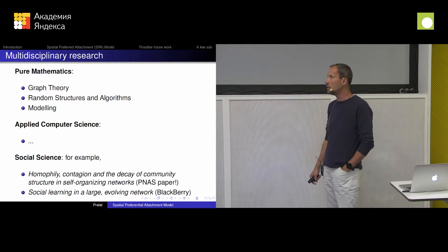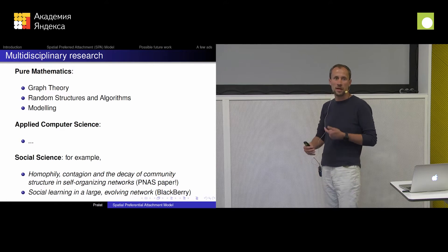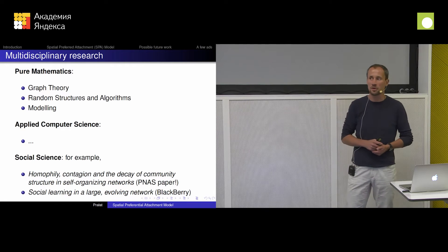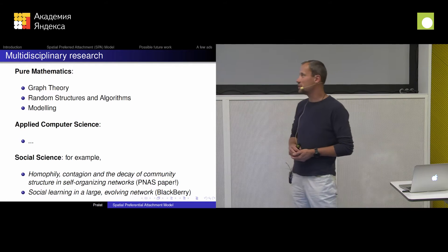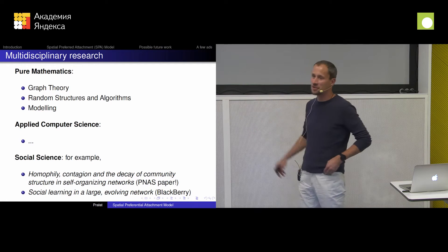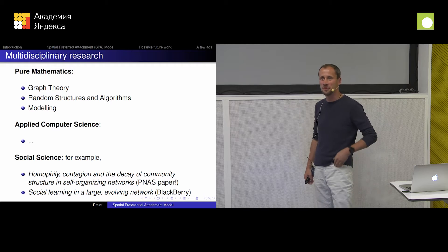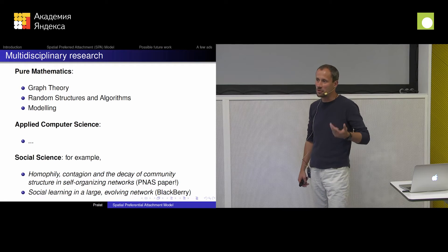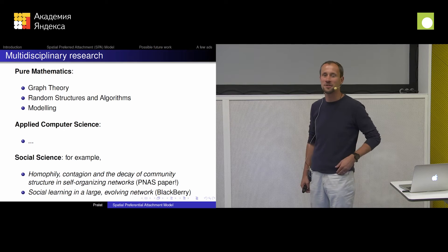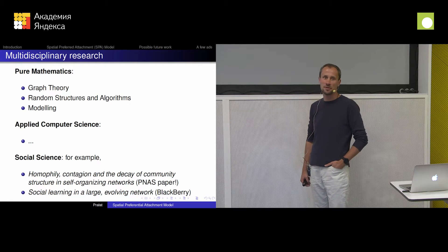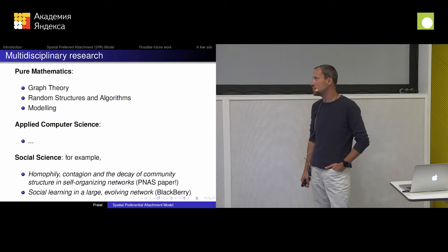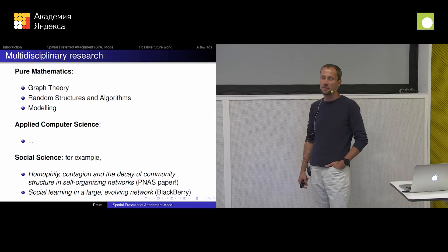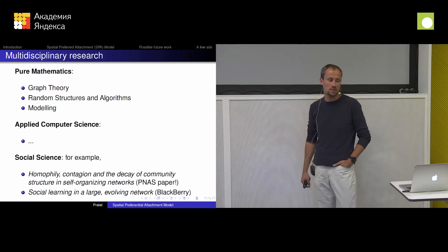Working with social scientists is also something new to me, but they also try to understand the mechanisms happening in the real world. And if you want to impress your president of the university or the dean, working with social scientists makes a lot of sense, because in computer science or mathematics you rarely publish in Science or Nature or some highly prestigious journals. But working with social scientists makes it easier — these things are important for them, and they publish in those high-prestige journals.